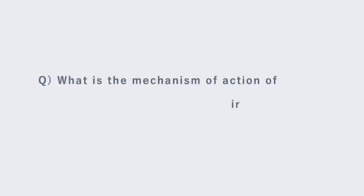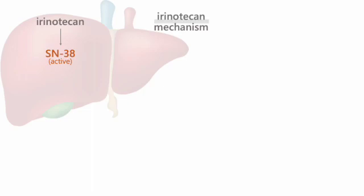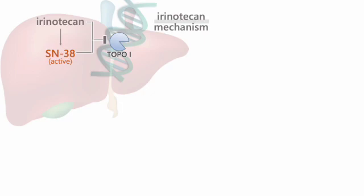The mechanism of action of irinotecan: Irinotecan is converted to the active metabolite SN38 in the liver. SN38 prevents DNA unwinding by inhibition of DNA topoisomerase 1, which results in irreversible double-strand breaks and ultimately cell death.